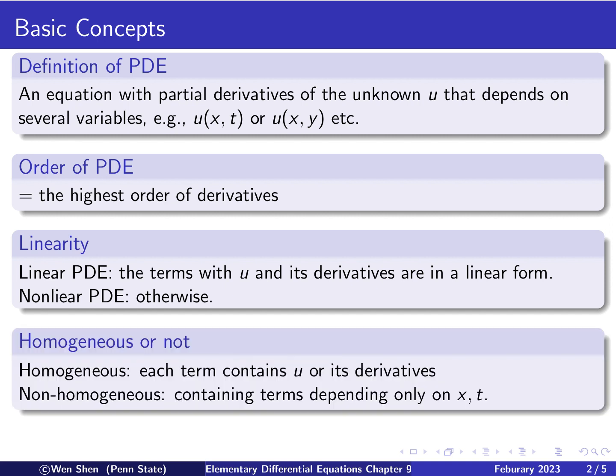Finally, there is also the concept of a homogeneous equation. For a homogeneous equation, each term in the equation contains u and its derivative. If your equation also contains terms that do not depend on the unknown u or its derivatives, but depends only on the independent variables x and t, then this is called a non-homogeneous equation. We'll see some examples.